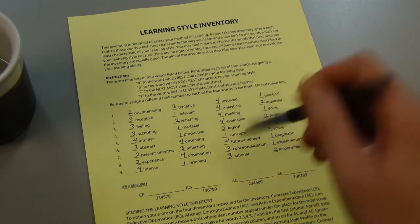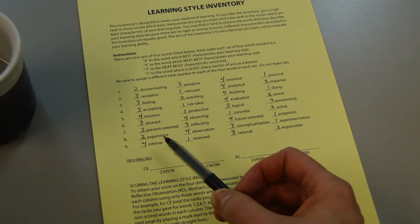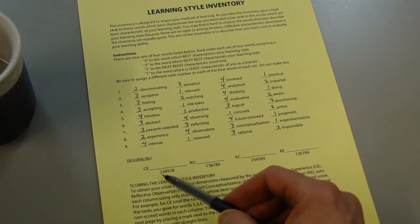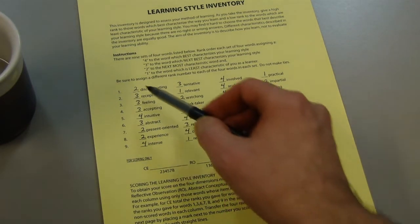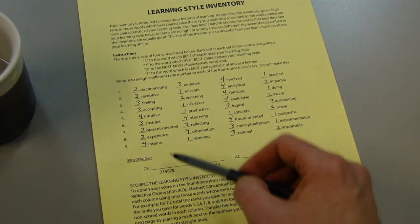So now I'm going to add to the scoring part, and here at the bottom you'll see that the four columns are labeled CE, RO, AC, and AE. For each of these four columns, they have a series of numbers and those numbers correspond to the different questions, and so I'm going to take the score from those questions.